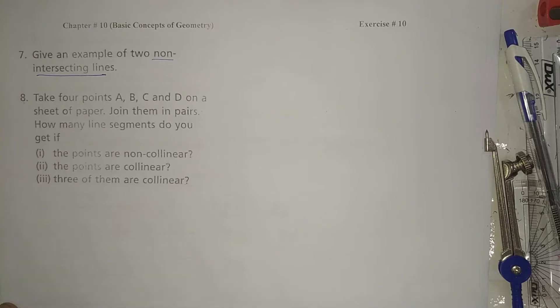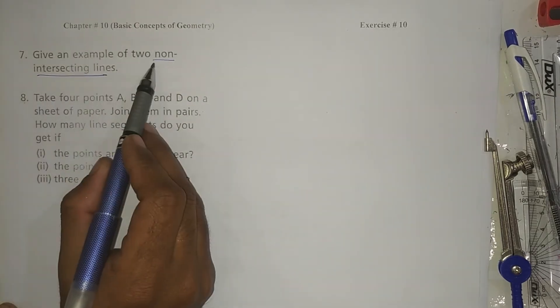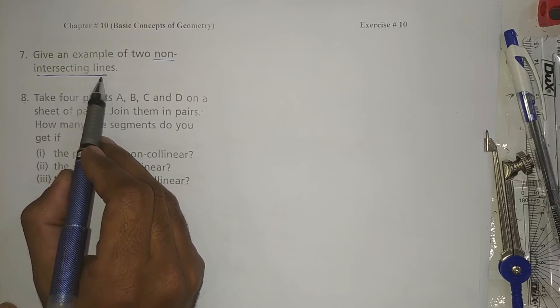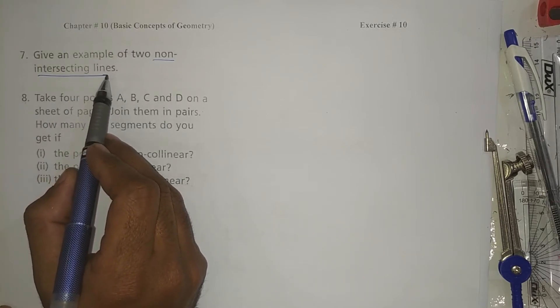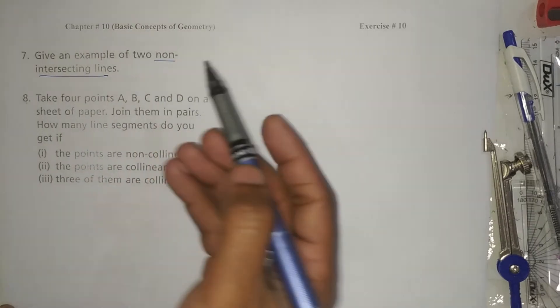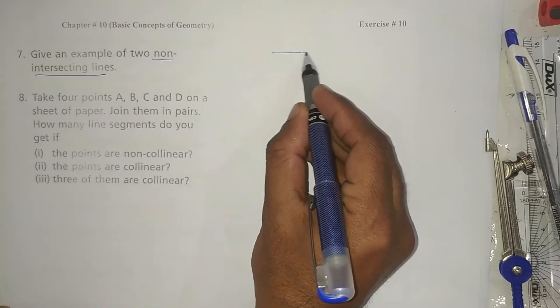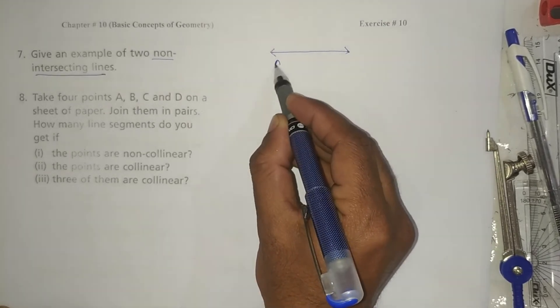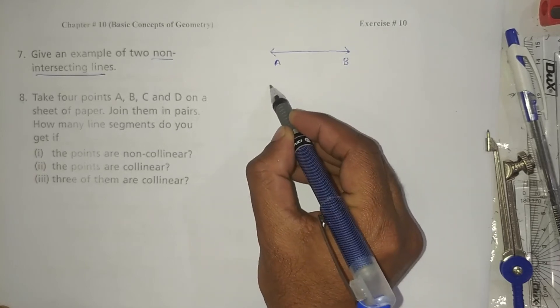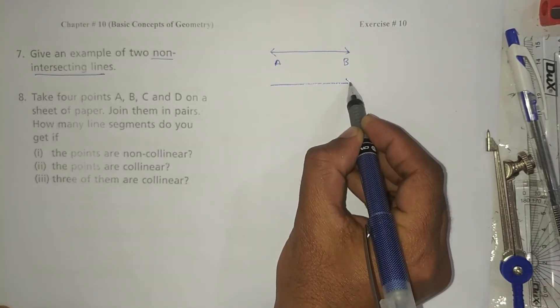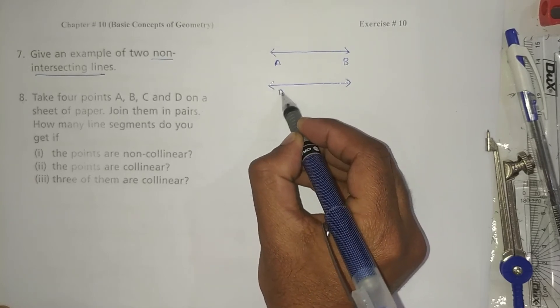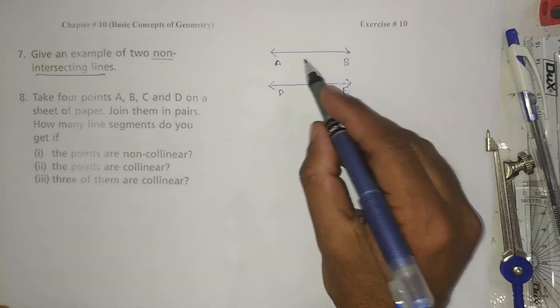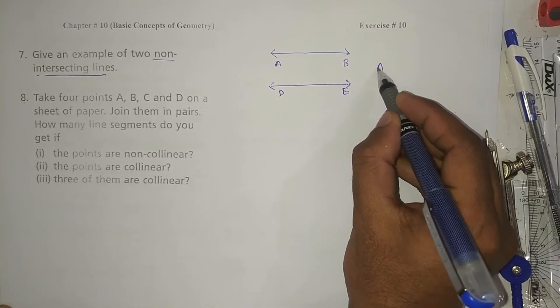So let's give an example of two non-intersecting lines. Non-intersecting lines, what are they? If they don't touch. So I draw one line, A B. Second line I draw, how many lines do I draw? Parallel lines.